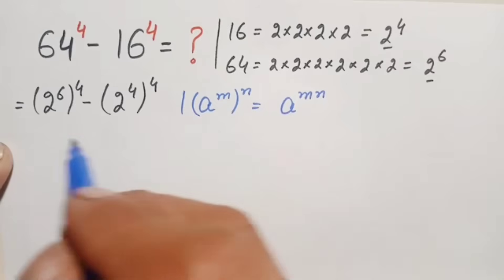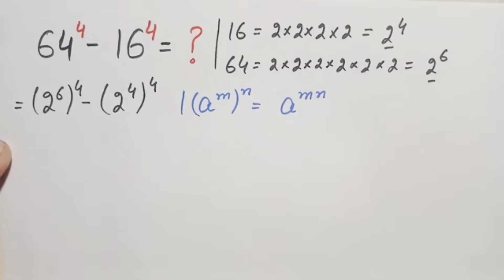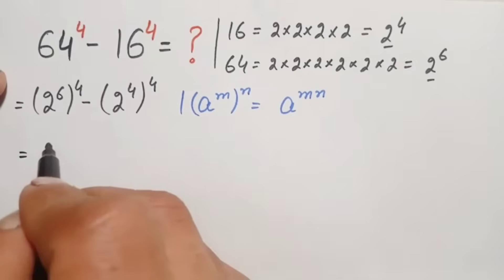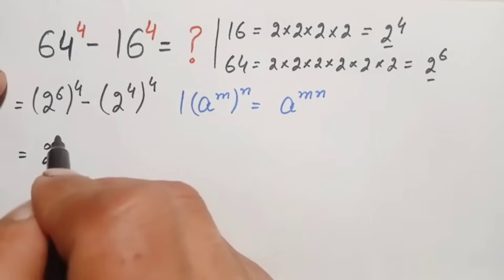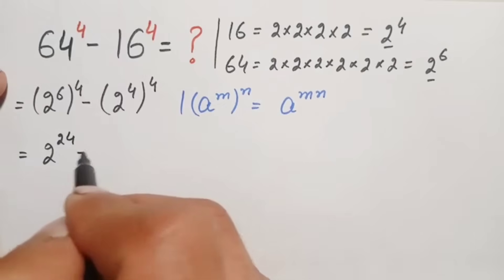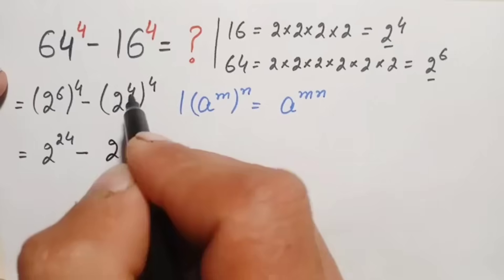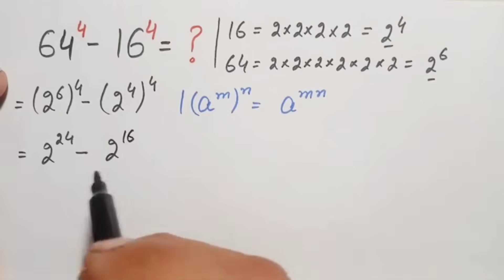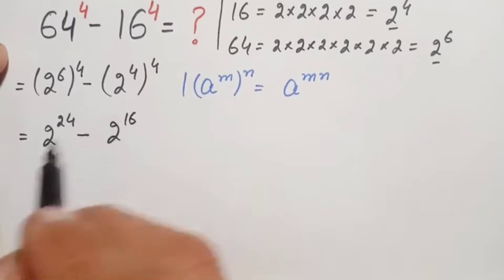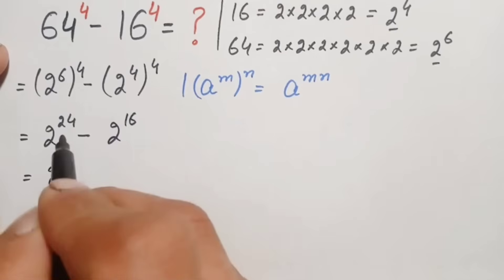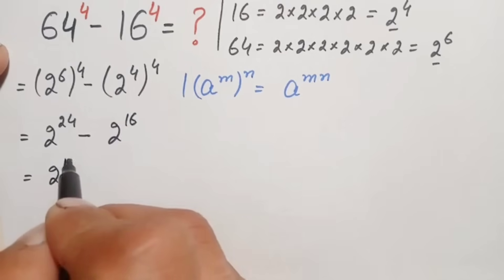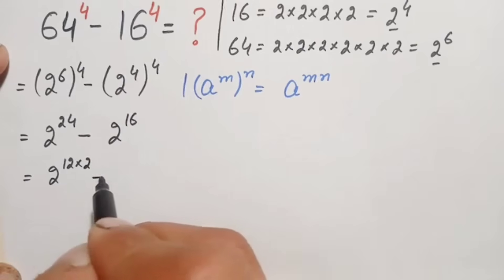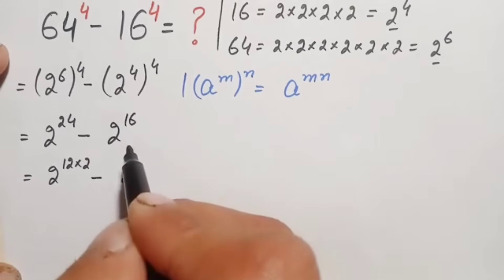Using this exponential identity, the first term becomes 2^(6×4) = 2^24, and the second term becomes 2^(4×4) = 2^16. We can then rewrite the powers: 24 = 12 × 2, and 16 = 8 × 2.